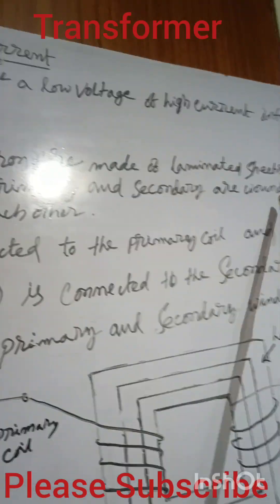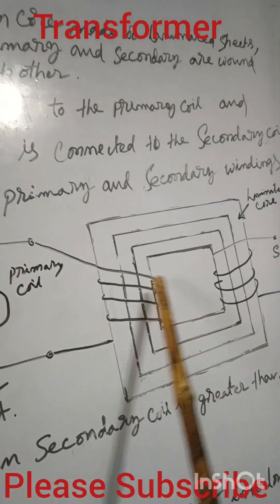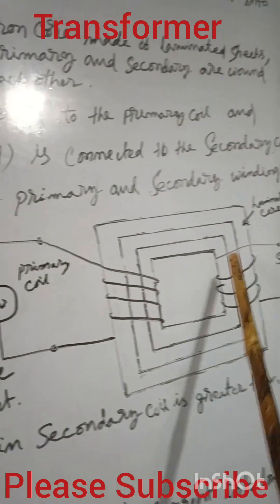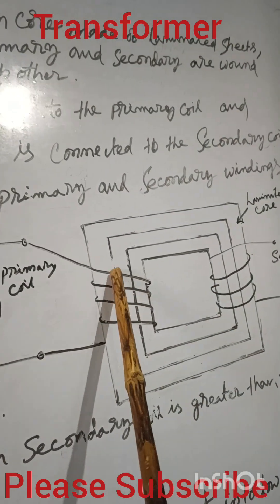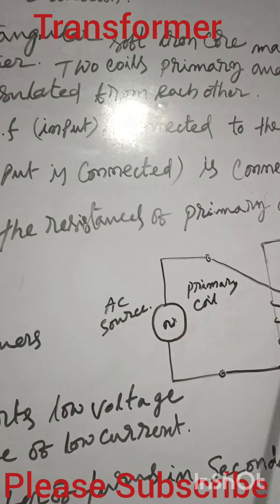Two coils primary and secondary are bound on the same core. Here primary core there and secondary core there. Here both are in the same core. The core is continuous, no breaks. But here these coils also insulated from each other and here turns also insulated from each other. They don't touch each turn of the coil wire.